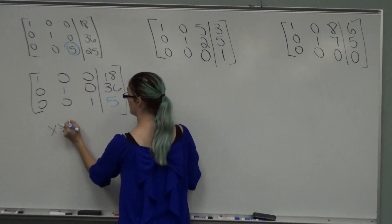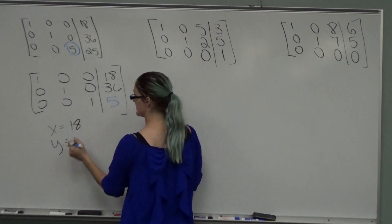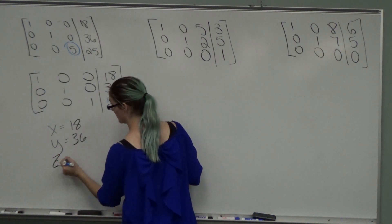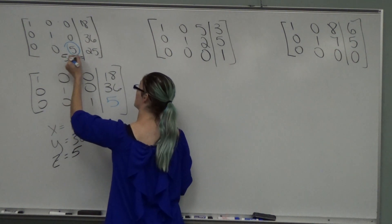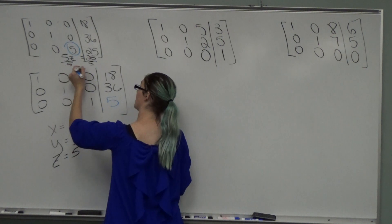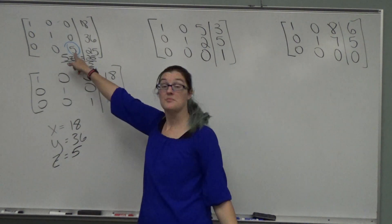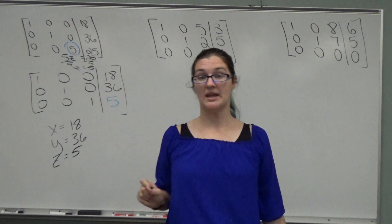x is 18, y is 36, z, 1z is 5. Up here, this was 5z equals 25. Divide by 5, z equals 5 would be another way to do it.